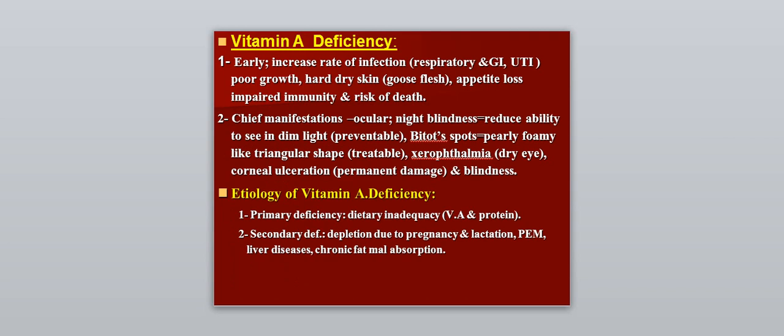Vitamin A deficiency is important because it is one of the key vitamins that decreases infection rate, especially in respiratory, GIT, and urinary tract infections. If there is deficiency, there is an increased rate of infection, poor growth, hard dry skin, loss of appetite, impaired immunity, and risk of death. The chief manifestation of vitamin A deficiency is ocular — night blindness, which is a reduced ability to see in dim light. This is an early stage and is preventable.